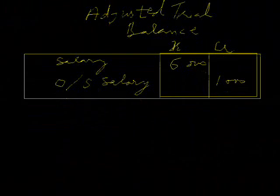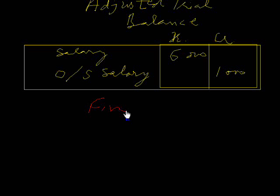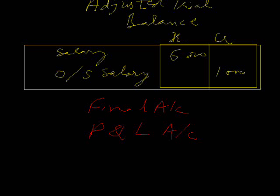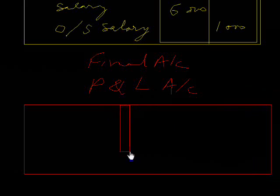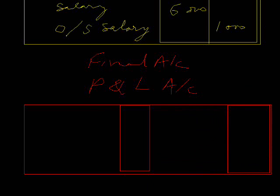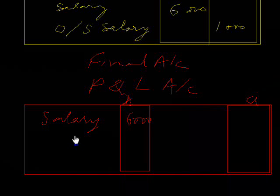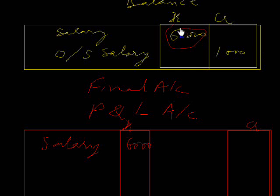Now we see the effect on final accounts. Suppose we are making a profit and loss account. This is the debit balance side and this is the credit balance side. We just show salary as six thousand. We will not add outstanding salary again in this, because in the adjusted trial balance we already show it when we make the trial balance.